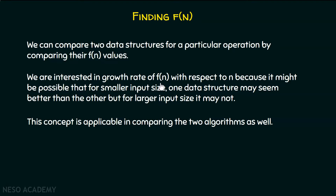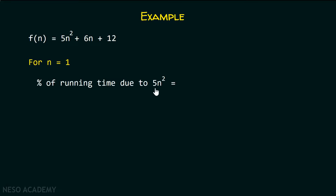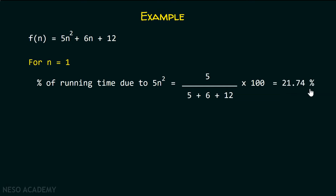Now, how to know the growth rate of f(n)? Let's say f(n) equals 5n² + 6n + 12, which represents the number of instructions executed depending on n. For n equal to 1, the percentage of running time due to 5n² is 5 divided by (5 + 6 + 12), times 100, which equals 21.74%. So 5n² is contributing 21.74% of the running time when n equals 1.